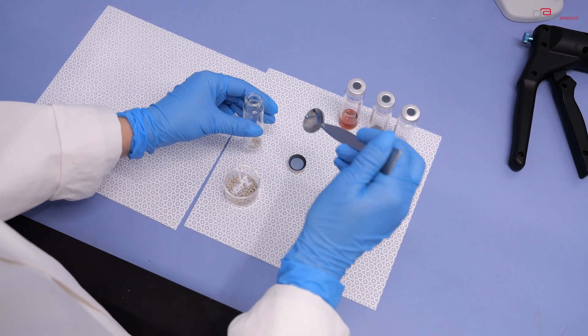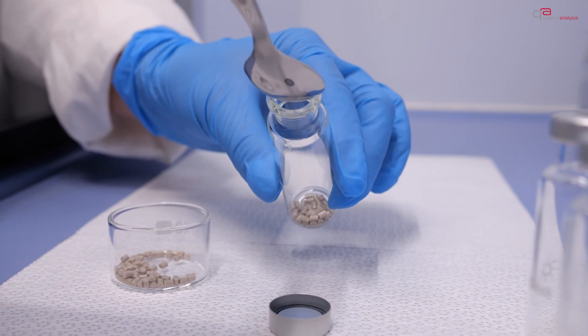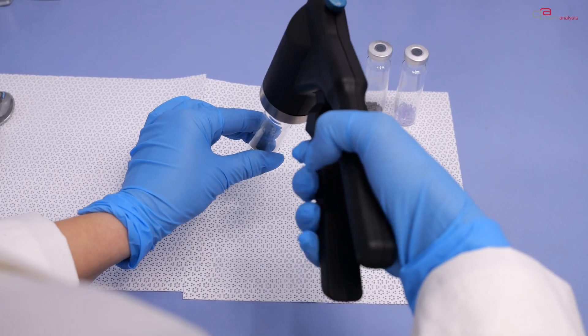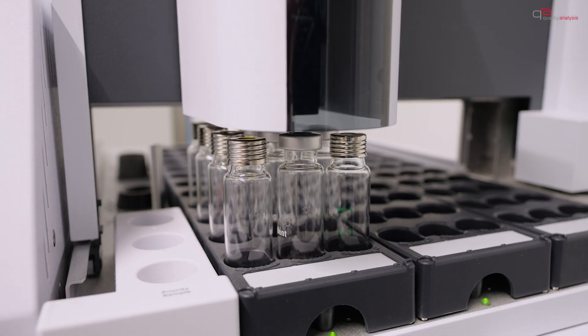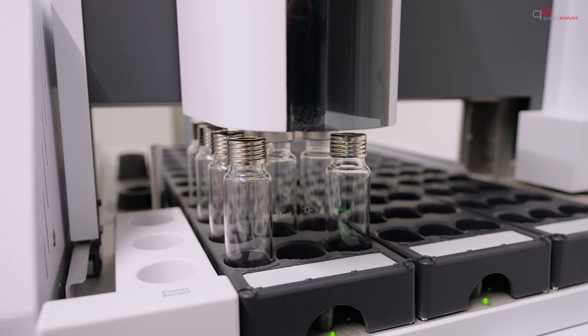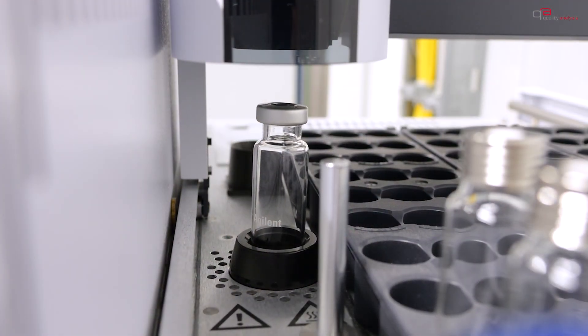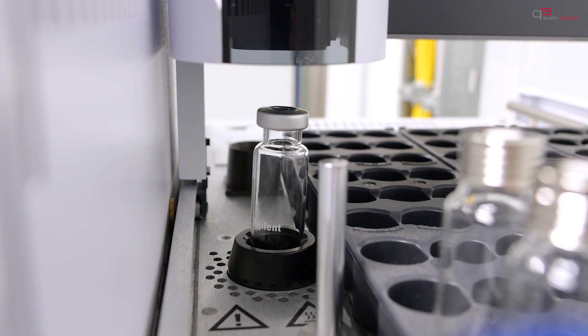First, the sample is placed in a gas-tight headspace vial and tightly sealed. The vessel is then heated until the volatile compounds pass into the gas phase. A volume of gas is extracted with a needle and injected into the GC.